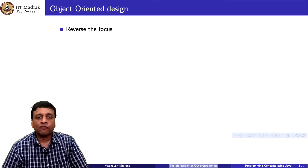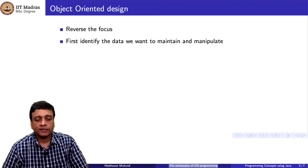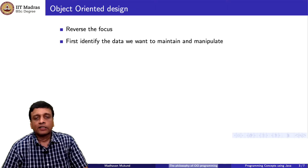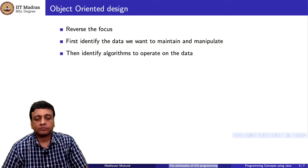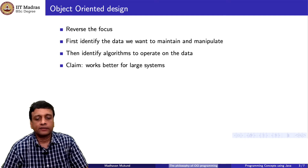The philosophy of object-oriented design is to reverse this focus. Here you first identify the data that you want to maintain and manipulate. For instance, if you are building a banking system, you need to talk about customers, bank accounts, different types of deposits, and so on. Then you identify the algorithms that will operate on the data.